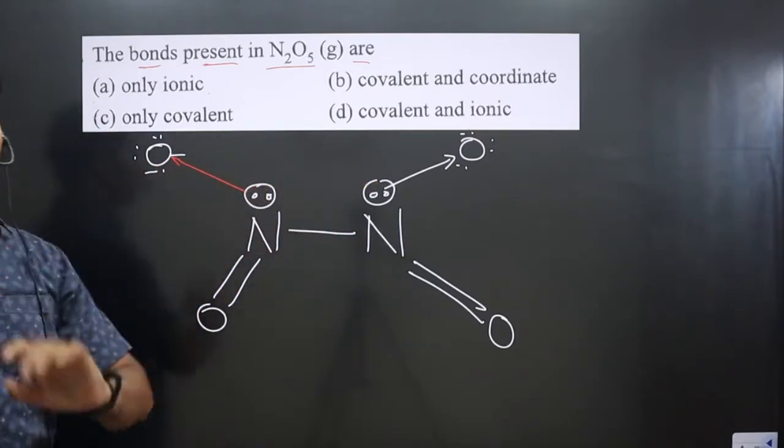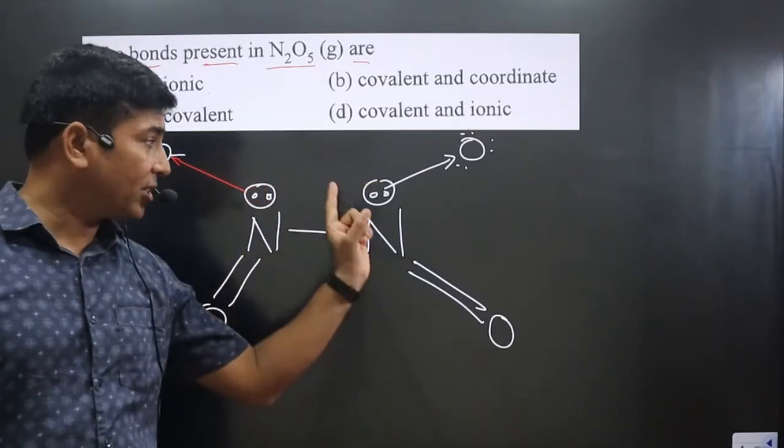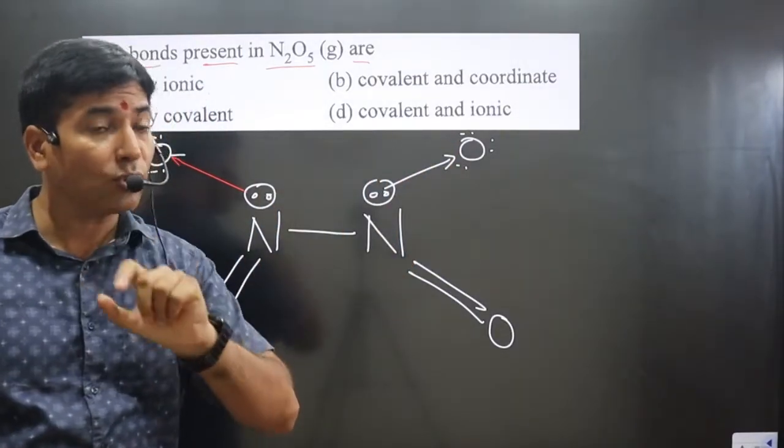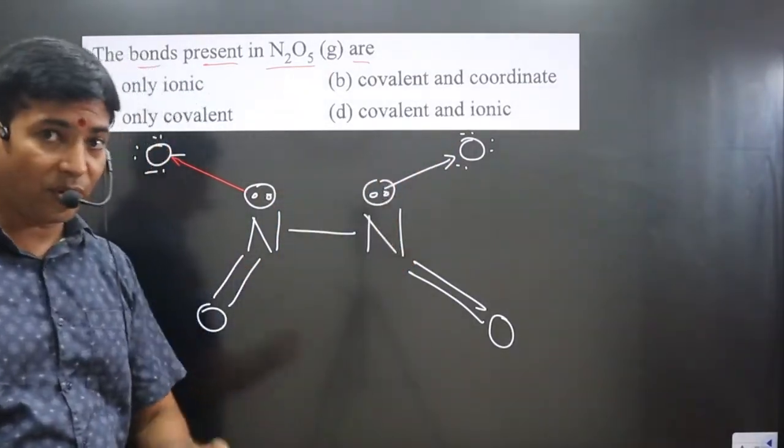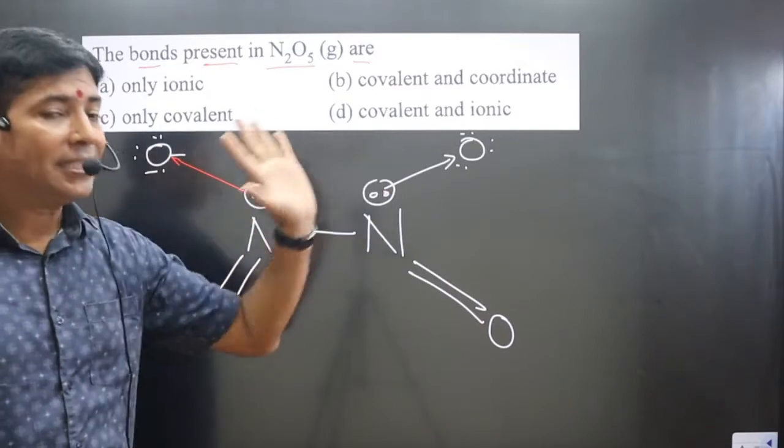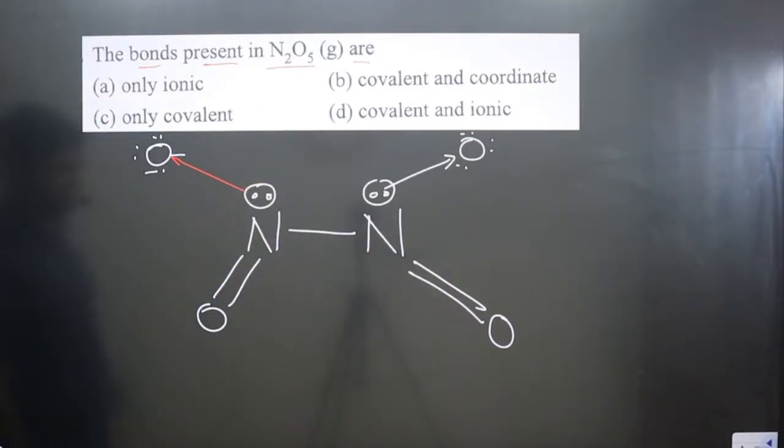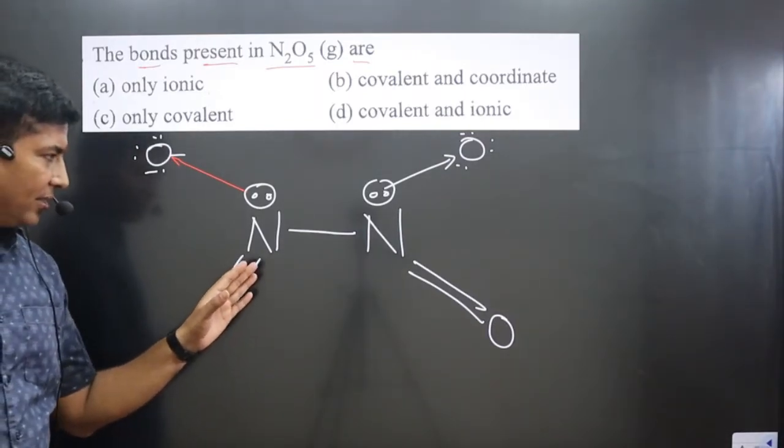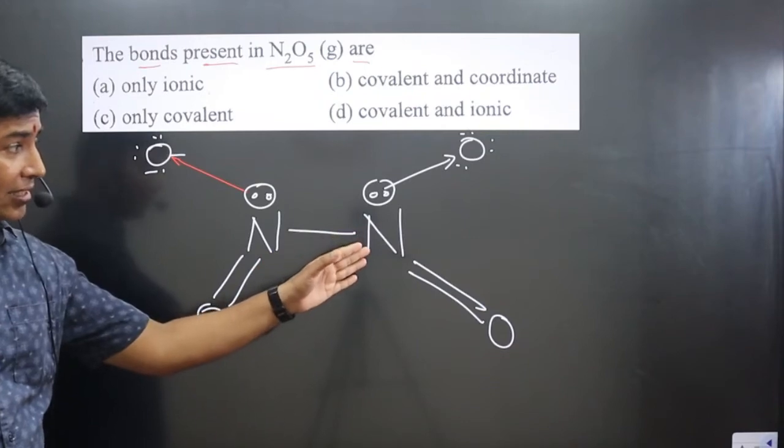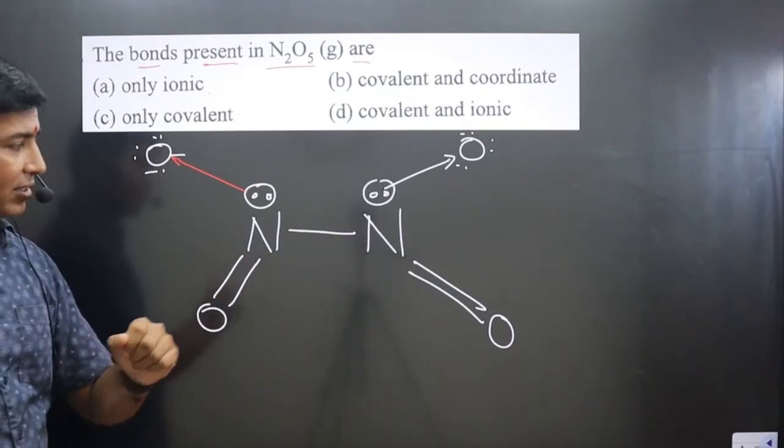Then coordinate bond formation is taking place. Sharing of electrons is taking place from one atom to another atom. There is no mutual sharing—the electron pair is shared from one atom to another atom. But still we are left with one oxygen.